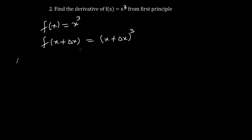In differentiation using first principles we use the Pascal triangle to expand our brackets. The triangle starts with 1 at the top, then 1 1, then 1 2 1, and so on — the edges are always 1 and each interior number is the sum of the two numbers above it. So for the power of 2 the row is 1 2 1.